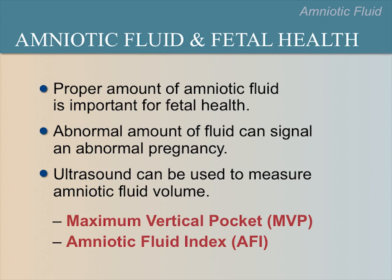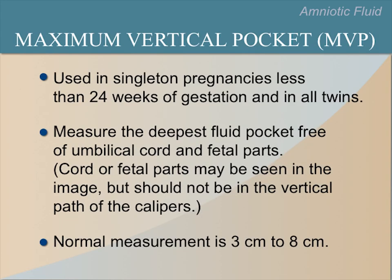Sometimes amniotic fluid can be either too high or too low, which can cause problems in the pregnancy. There are two ways to measure amniotic fluid with ultrasound: the maximum vertical pocket and the amniotic fluid index. We use the maximum vertical pocket method, or MVP, with singleton pregnancies less than 24 weeks gestational age, or when twins are present.